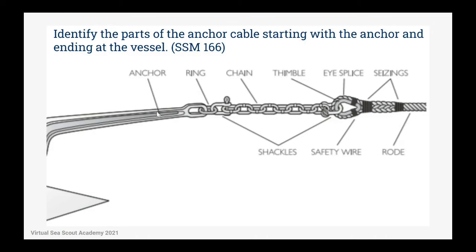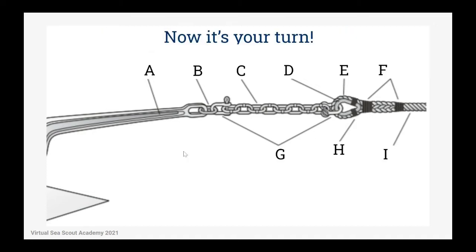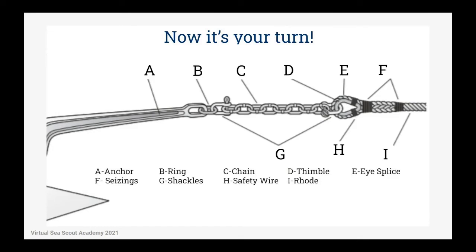So, the full parts list going from anchor to vessel: the anchor, the ring, shackles, chain, then the thimble, eye splice, safety wire, seizing, and rode. I hope you got that, because now it's your turn to label those. Take a minute. How did you do? I hope you did well.